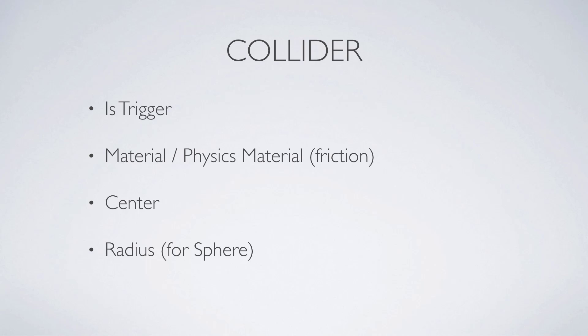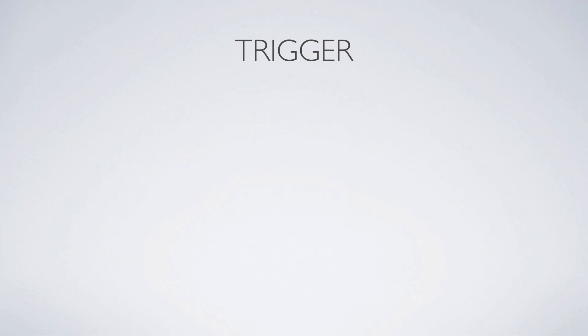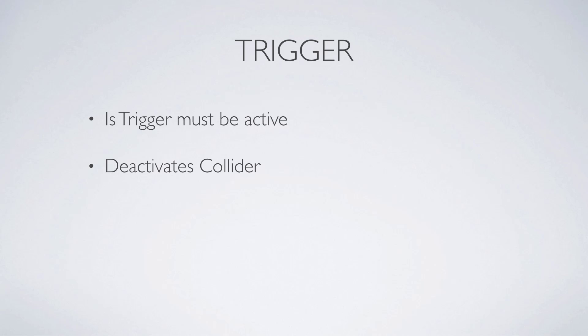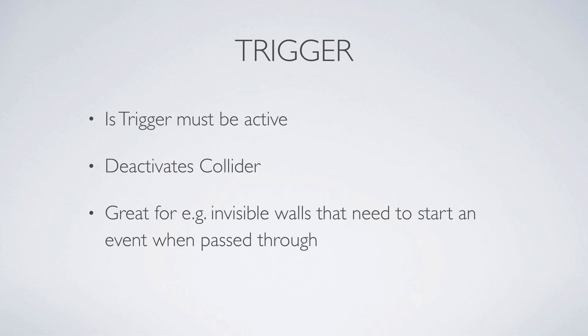Next let's have a look at the trigger. In order to use a game object or a physics collider as a trigger you need to activate the isTrigger property. It deactivates colliders, so whenever this trigger is activated the surface is not like a wall — it doesn't behave like a wall or a skin anymore, so it can simply get passed through. That is great for example for invisible walls that need to start an event when passed through.